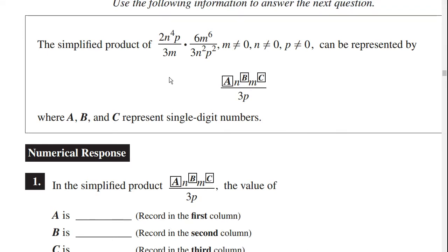The simplified product of 2n to the 4 times p, times 6m to the 6, divided by 3m times 3n squared times p squared, where m, n, and p are not 0, can be represented by a expression where a, b, and c represent single-digit numbers. So we have to figure out a, b, and c.